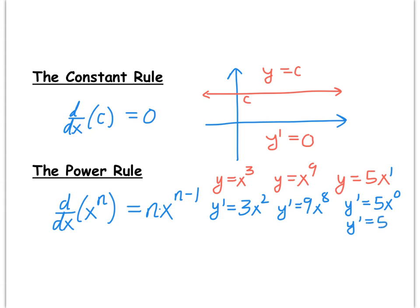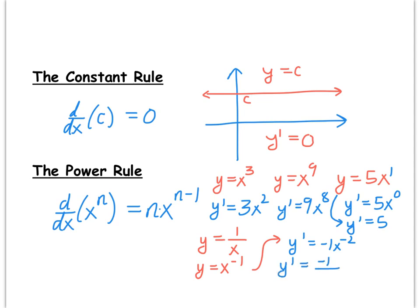Another way to think of that: you're taking the derivative of the linear function 5x, and since the derivative measures slope, it's just 5. The beauty of the power rule is that it also applies to functions written as a power of x but not expressed that way initially. For example, y equals 1 over x can be written as x to the negative 1. Applying the power rule, the negative 1 drops in front, and subtracting 1 gives an exponent of negative 2, so the derivative is negative 1 over x squared.